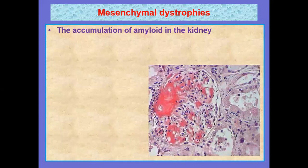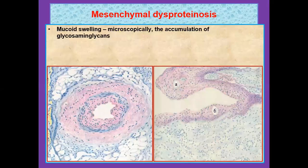Here we see the accumulation of amyloid in the kidney, and in the picture you can see how it appears in histology. Mucoid swelling microscopically involves the accumulation of glycosaminoglycans.